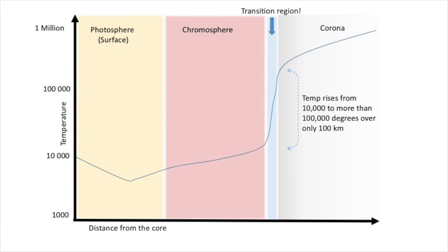Once we leave the chromosphere we reach another boundary region called the transition region. Compared to the thickness of the other layers of the Sun, the transition region is really very thin — only about 100 kilometres or so thick. But what's very strange is that in this narrow region the temperature and density of the Sun changes dramatically. We go from about 10,000 degrees on the chromosphere side of the transition to a million degrees on the corona side. This is a huge jump and we don't really understand the reasons for it, although it's definitely a question on many scientists' minds.